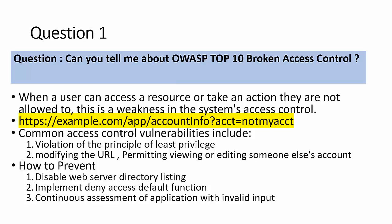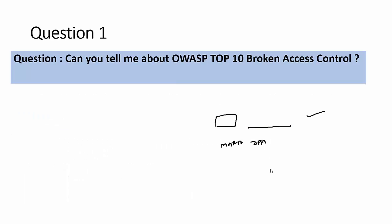When a user accesses a resource or takes an action they are not allowed to, this is a weakness in the system's access control. For example: https://example.com/app/account_info — instead of my account I change the name to 'Mara' or 'Zara' and hit enter. By default I shouldn't have access to that, but if I can access it, there is a flaw at the application level.